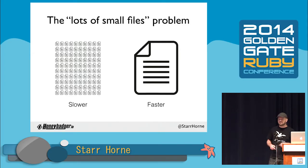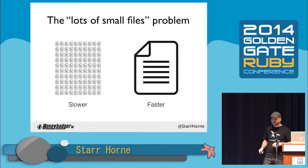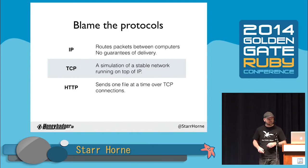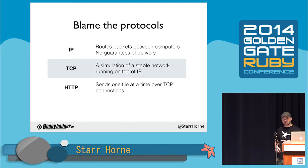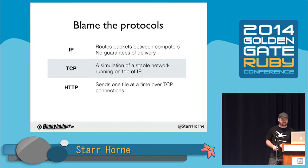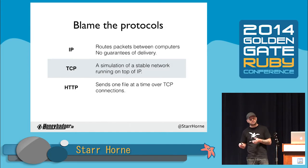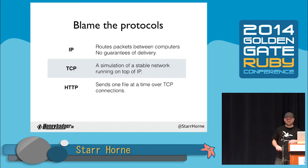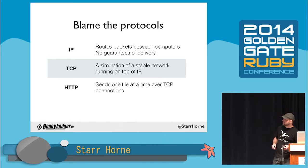Why is that? It's because of the way the protocols interact. The way that HTTP uses TCP. We have IP, which just routes packets between computers with no guarantees of delivery or order. Then we have TCP, which is an abstraction of a stable network running on top of unstable IP — it guarantees delivery in order, all about reliability. And finally we have HTTP, which is what we use to request and manipulate files over TCP. HTTP 1.x is fundamentally inefficient in the way it uses TCP.